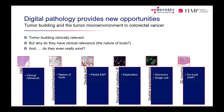There are three areas to cover today: first, tumour budding as a clinically relevant prognostic factor in colorectal cancer; second, the nature of buds and what makes them important; and third, whether buds actually exist as described.